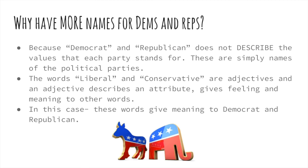The reason that we call Democrats leftists or Republicans rightists is because that also describes what they value. We have these other ways to describe them as a way to give feelings and meanings to those labels. What we're saying is that when we call Democrats liberals or leftist-leaning people, we're giving meaning to what they value. And when we call Republicans conservatives or right-leaning people, we're giving value and meaning to what that stands for.